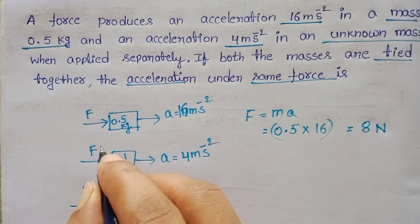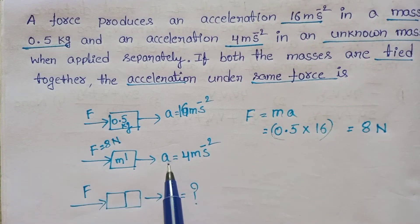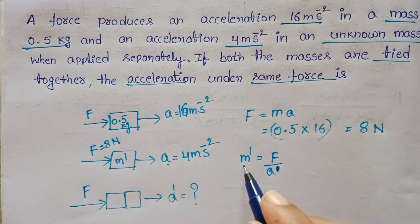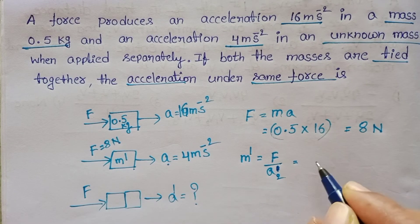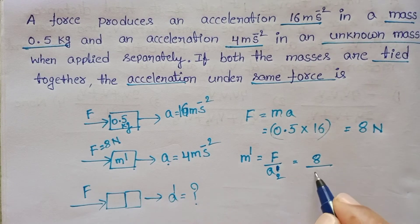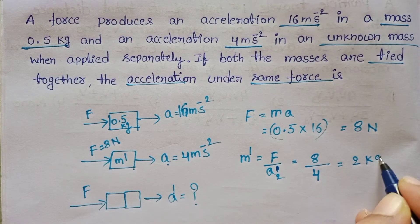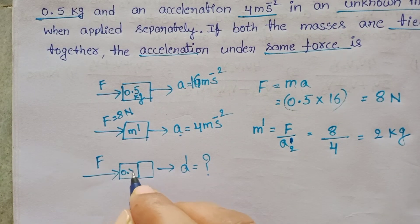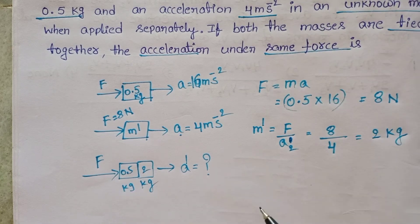The same force is applied on the unknown mass and we know the acceleration, so find out the mass. In the second case, M = F/A₂, force is 8 newton and acceleration is 4 m/s², so the unknown mass is 2 kg.